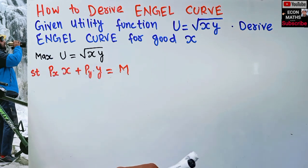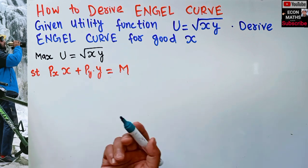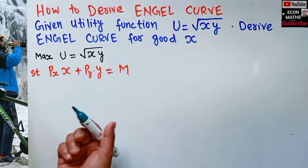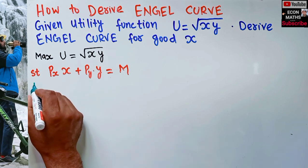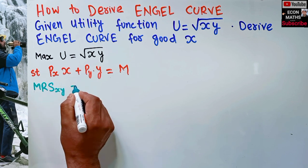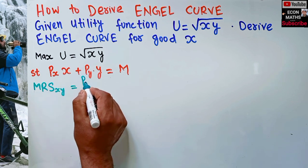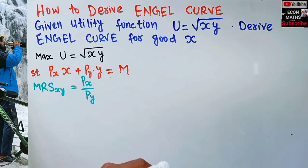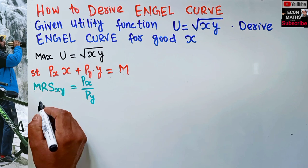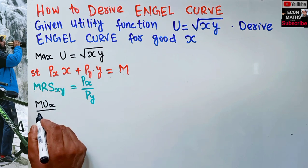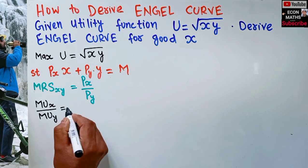Now we know that utility maximization requires the first-order condition: our marginal rate of substitution between good x and y should be equal to the ratio of the prices — price of good x over price of good y. MRS is simply the marginal utility of good x divided by marginal utility of good y, and it should equal Px/Py.